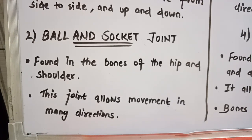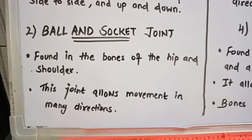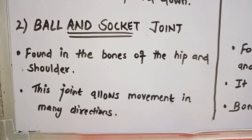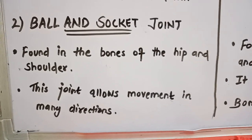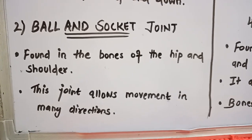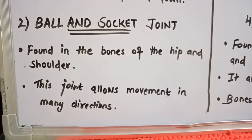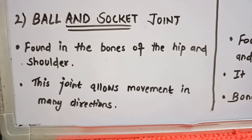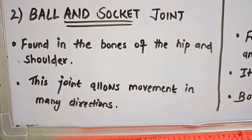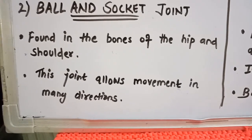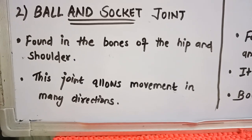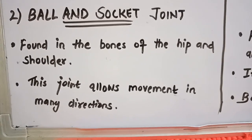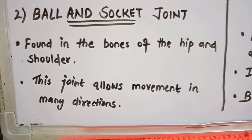Second, we have the ball and socket joint. It is found in the bones of the hip and shoulder. This joint allows movement in many directions, which is why we are able to move our shoulder in any direction we want. The same joint is also present in the bones of the hip.